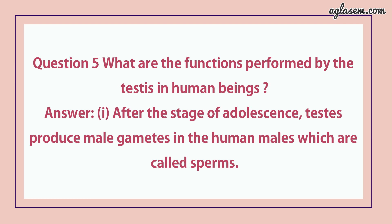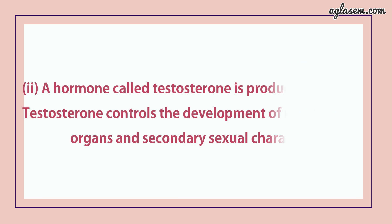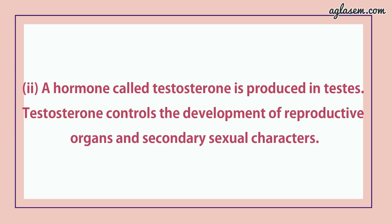Answer: first, after the stage of adolescence, testes produce male gametes in human males, which are called sperms. Second, a hormone called testosterone is produced in testes. Testosterone controls the development of reproductive organs and secondary sexual characters.